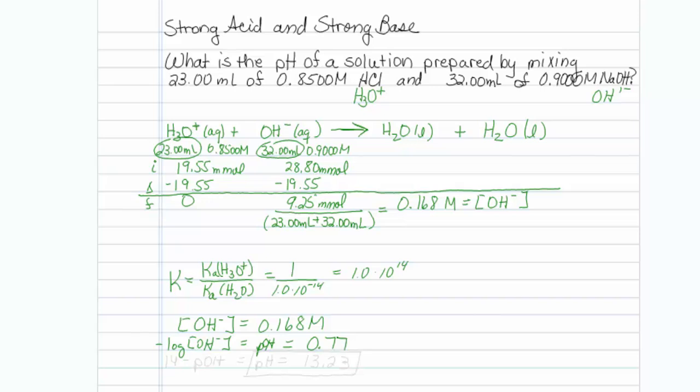And therefore my pH would be equal to 13.23, because 14 minus the pOH is equal to the pH. So that is the pH of that particular mixture. You go ahead and check your own homework problem.